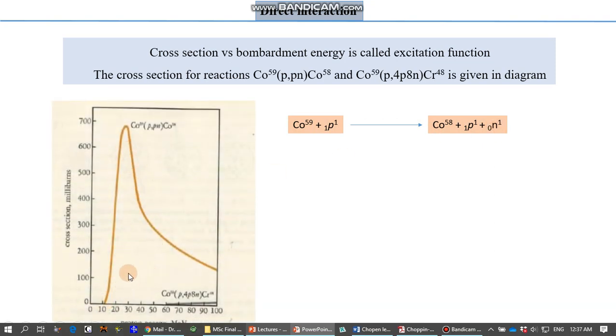We have already discussed that when the kinetic energy of bombarded particle increases, at a certain amount the cross section also increases. Cross section means the nucleus will be susceptible to reaction at certain amount of energy, and this amount of energy is here in this range. This curve is sharp.